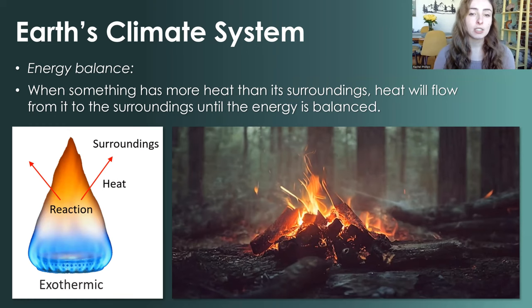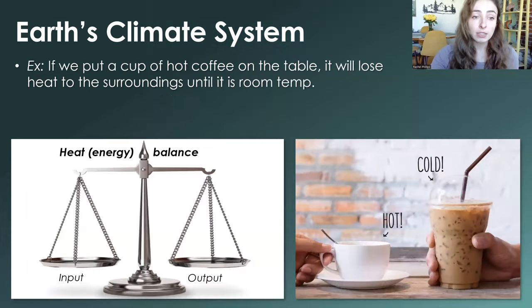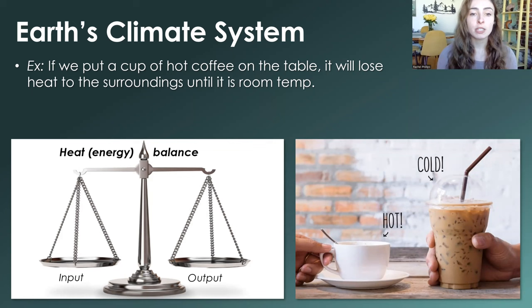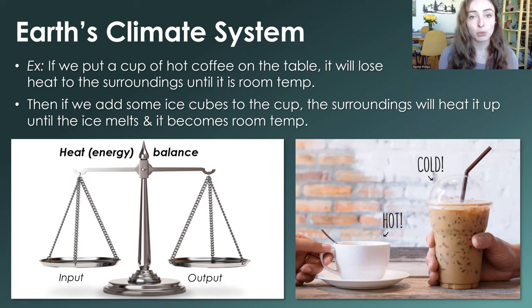Earth's climate system, and pretty much any system that involves temperature or heat, involves some sort of energy balance. When something has more heat than its surroundings, the heat will flow from it to the surroundings until the energy is in balance. For example, if we put a cup of hot coffee on a table, it will lose heat to the surroundings until it's room temperature. Likewise, if we put some iced coffee on the table, it will gain heat from the surroundings until the ice melts and it becomes room temperature.